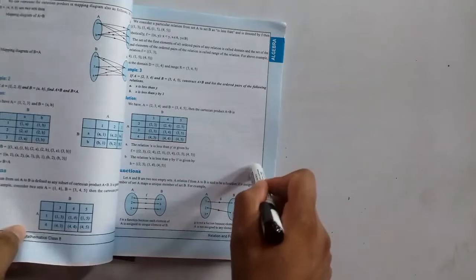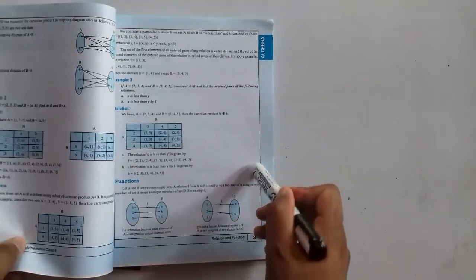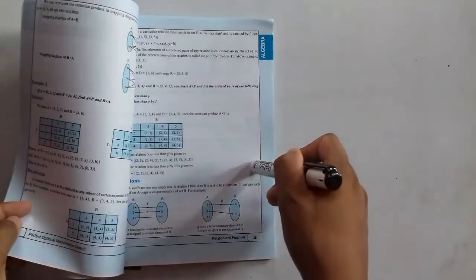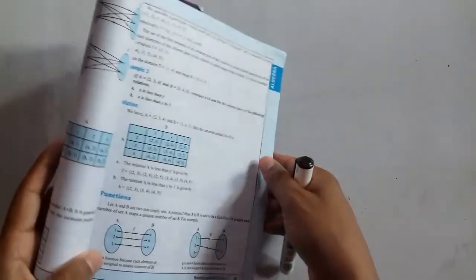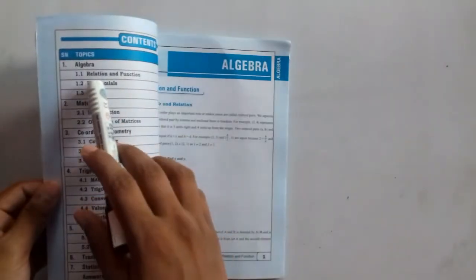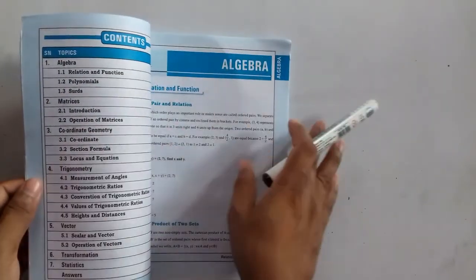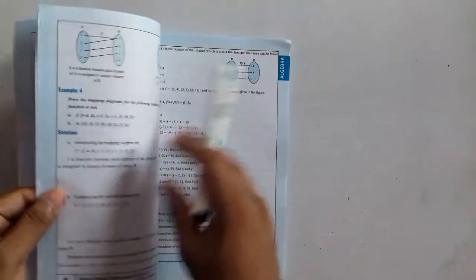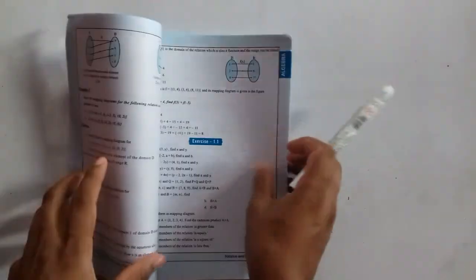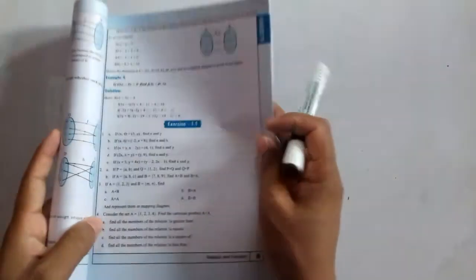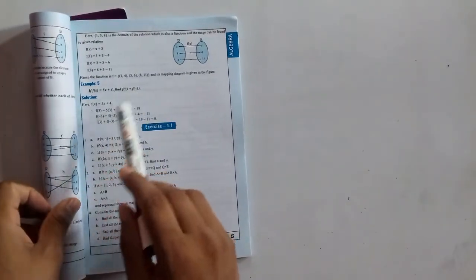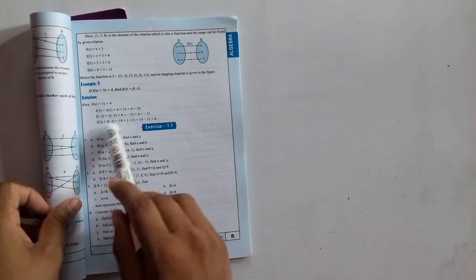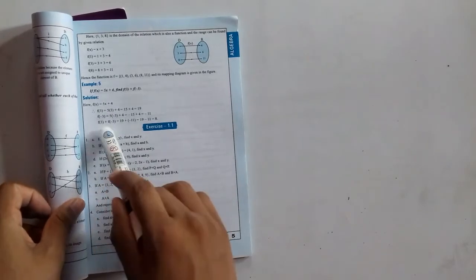If you are learning optional mathematics for the first time in class 8, then please go through the videos of class 6 and 7. This will depend on relation and function. Here we will start exercise 1.1 question 1. In this video we will be solving parts A and B.